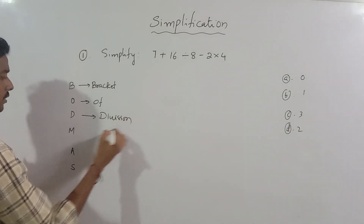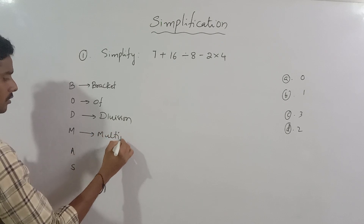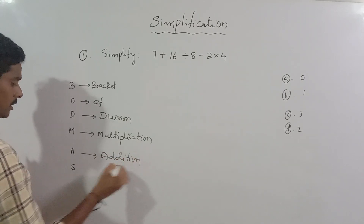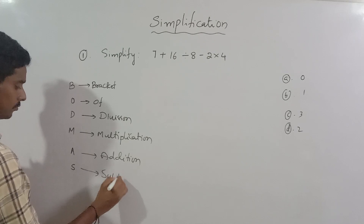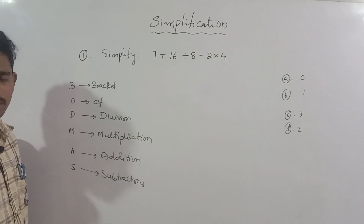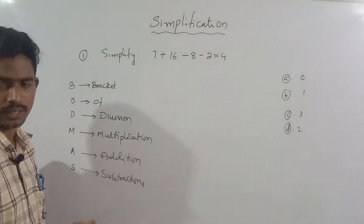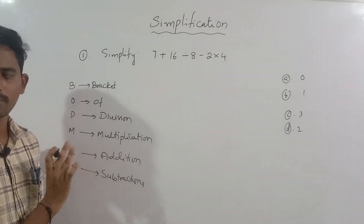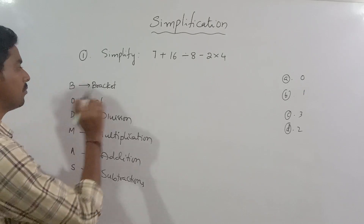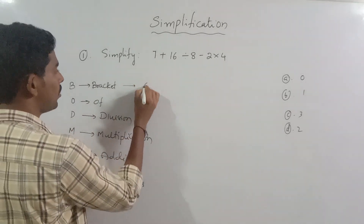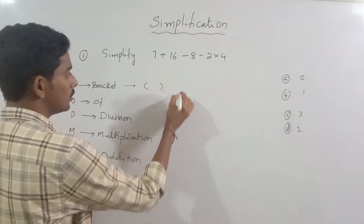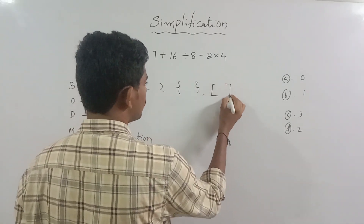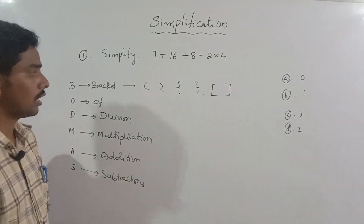You need to show: B is for Brackets, O is for 'of' which means multiplication, D is for Division, M is for Multiplication, A is for Addition, and S is for Subtraction. Then move on. Brackets: small bracket, then curly bracket, and then big bracket — the square bracket. We will do this bracket-wise.